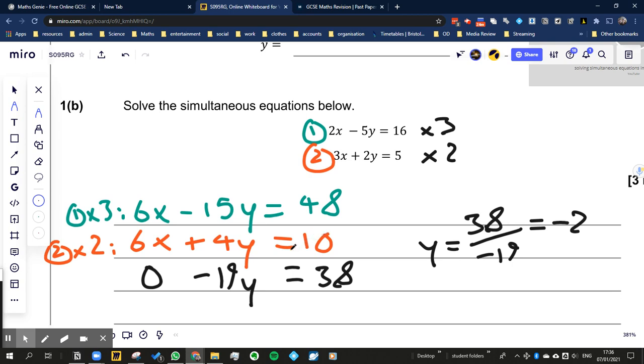And then what we're going to do is we're going to do equation 1 times 3, which is all this stuff we've done here. So we're going to take all that and we're going to take it away from equation 2 times 2, which is all this stuff here.